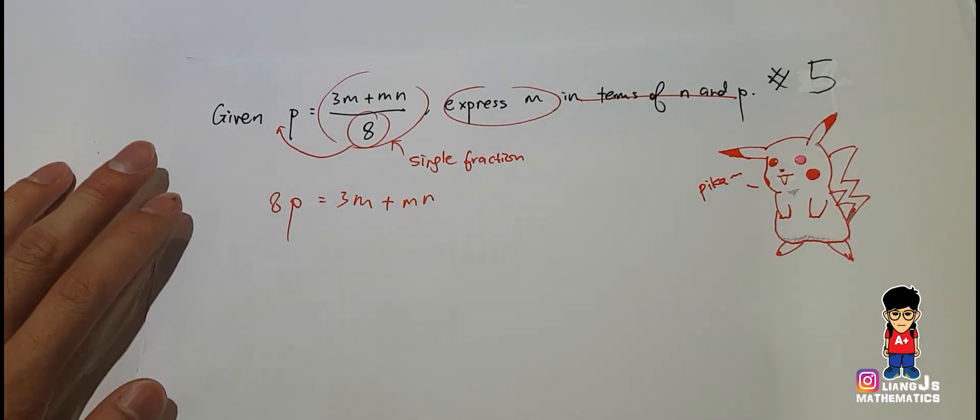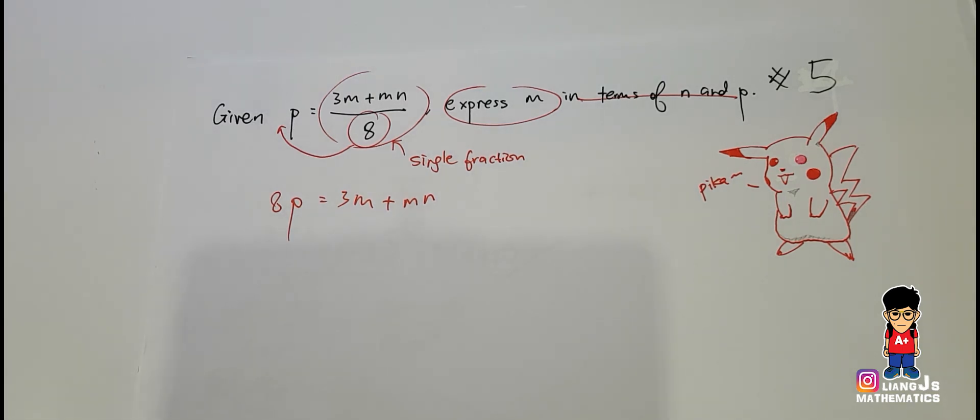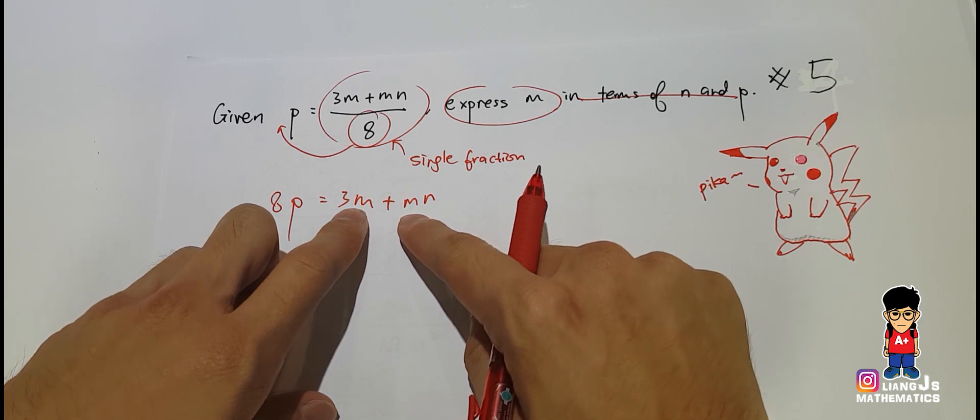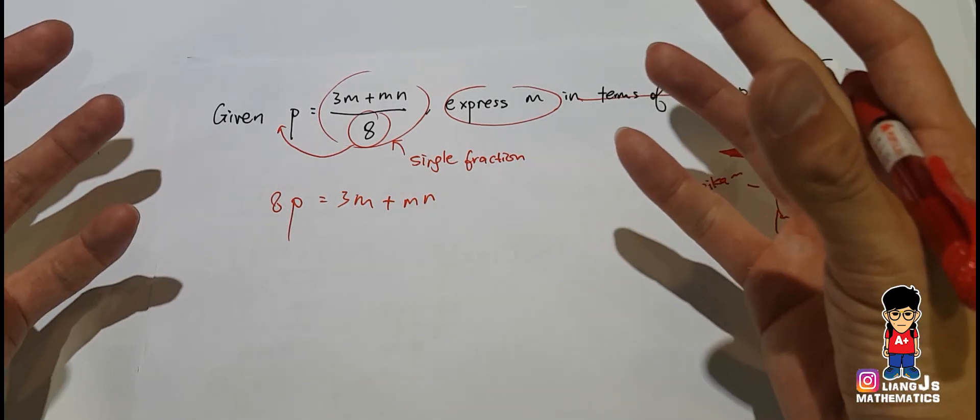Once you move the 8 away, the problem comes because you want to get m equals to something, but 3m plus mn can't be added because the unknowns are different.